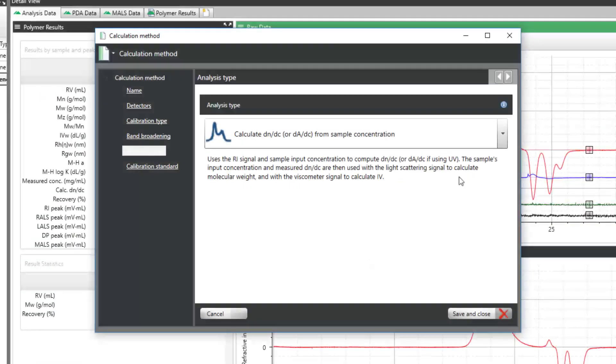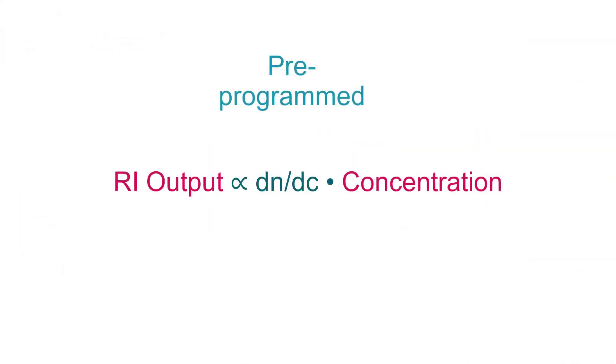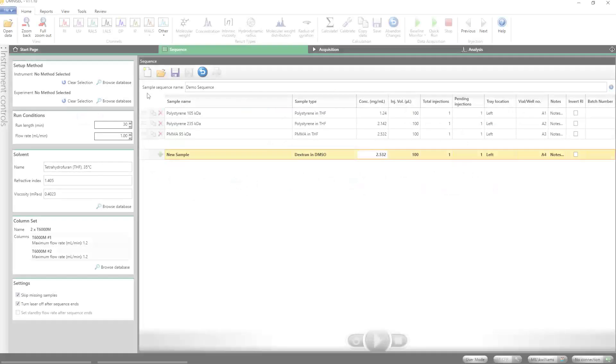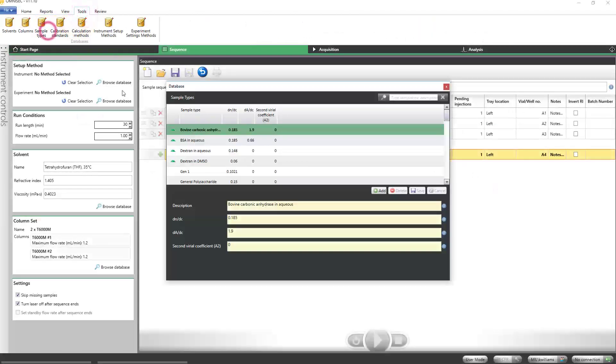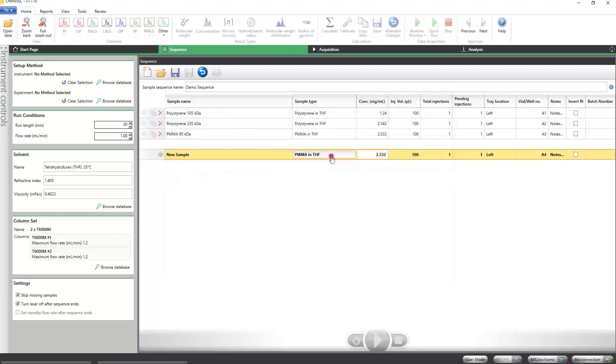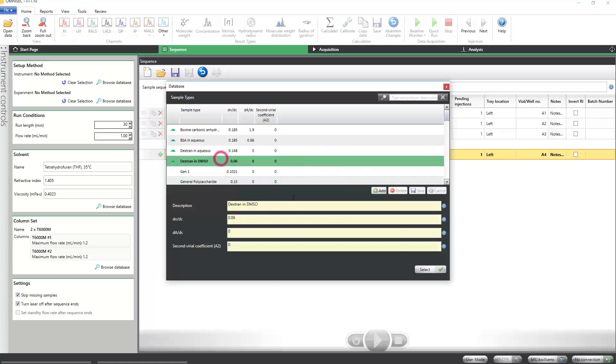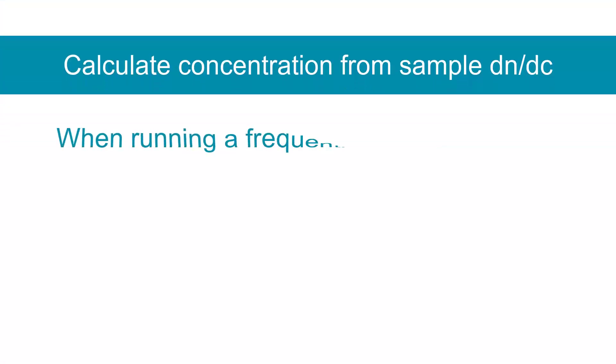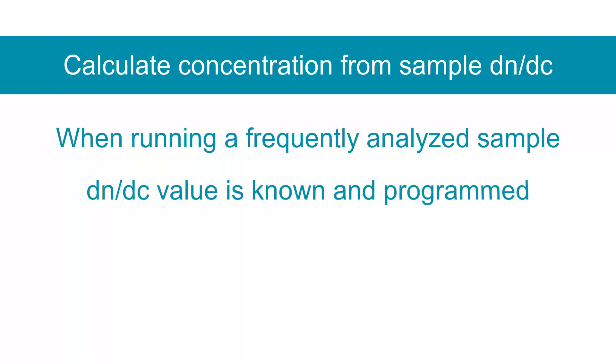The second, Calculate Concentration from Sample DNDC, uses a pre-programmed DNDC value along with the observed refractive index response to determine the concentration of the sample. The sample DNDC is set in the sample type database and then assigned to the sample in the sequence. This method works well when running a frequently analyzed sample type in which the DNDC value is known and has been programmed.